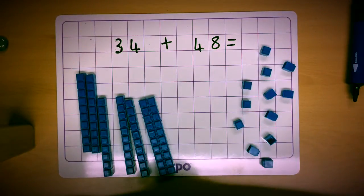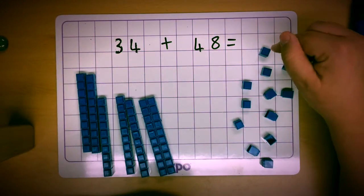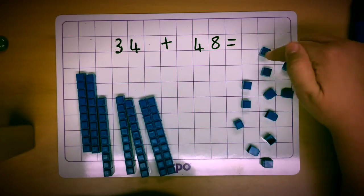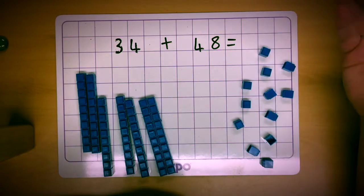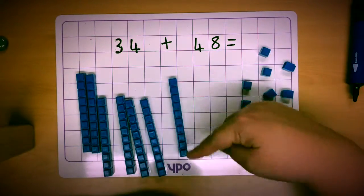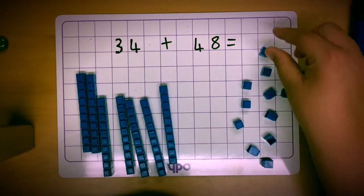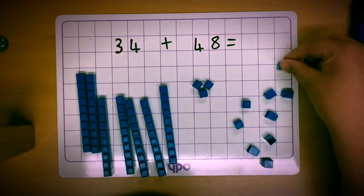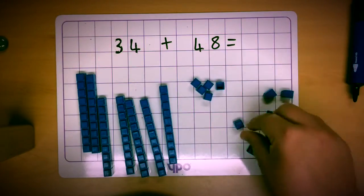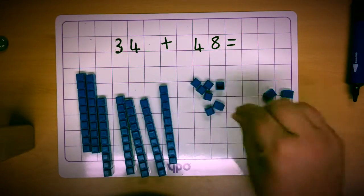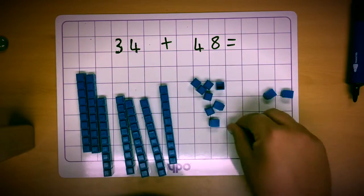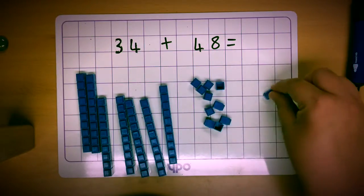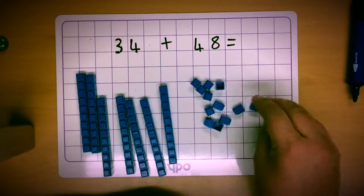Once they've got to 70 they need to start counting on just one at a time because each of these cubes just means number one. Where it takes ten to make a ten stick, it's one cube, so we would have 71, 72, 73, 74, 75, 76, 77, 78, 79, 80, 81, 82.